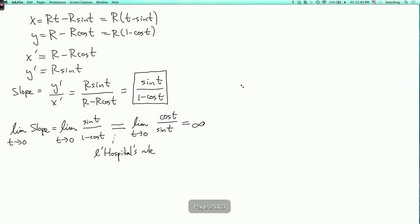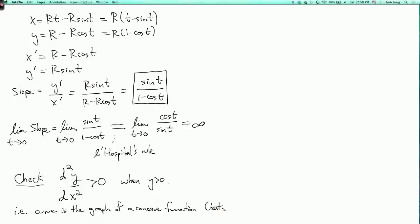In other words, we could also check that d squared y dx squared is negative when we're not touching the x-axis, so when y is bigger than 0, so i.e. the curve is the graph of a concave function, in between the points where it touches the x-axis.